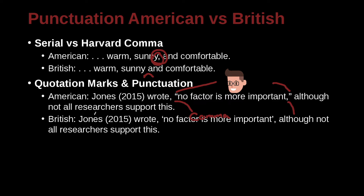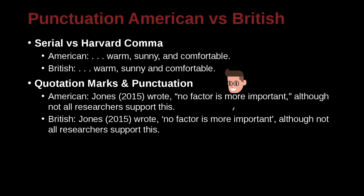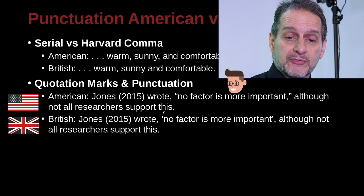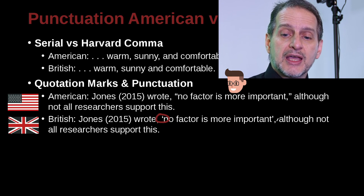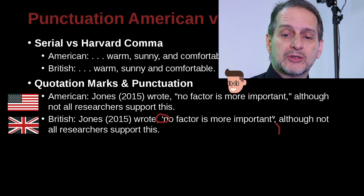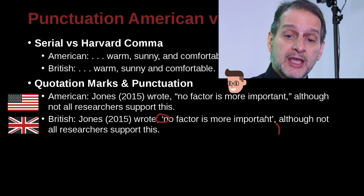Here's the British approach. It would be Jones 2015: 'No factor is more important,' although not all researchers support this. There are a couple of differences here between the American and the British approach. For example, the first point is this quotation mark — the British style is not using double quotations, but single quotations. And you can see that the comma here is on the outside of the single quotation mark: no space before, one space after. So that is really the difference between the American and British approaches.